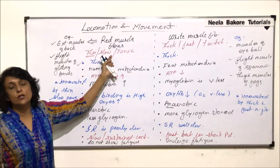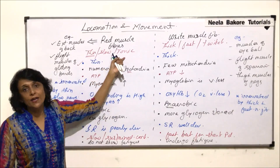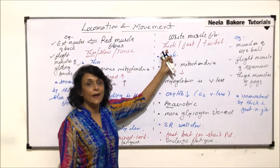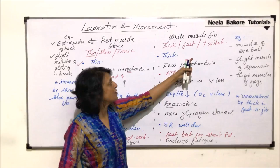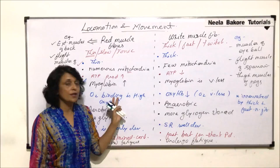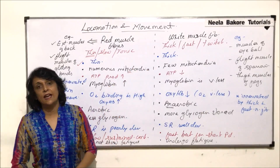To summarize: red muscle fibers are called thin because they are thinner in diameter, slow because they show slow and sustained contractions, and tonic because they remain in a contracted state for a very long period of time without undergoing fatigue. White muscle fibers are called thick because of their larger diameter, fast because they show very quick contractions, and such quick contractions are also known as twitches — that is why white muscle fibers are also known as twitch muscle fibers.